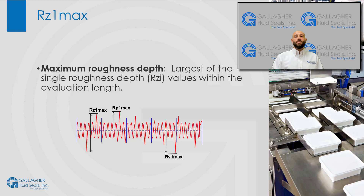Now, let's move on to RZ1max and RZ. RZ1max, or maximum roughness depth, is the largest of the Rzi values within the evaluation length. RZ1max differs from RT in that the maximum profile peak and maximum valley depth occur within the same sampling length. In the below profile trace, RZ1max occurs in the first sampling length.